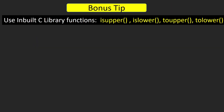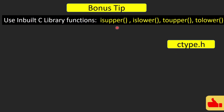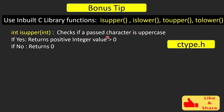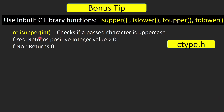Now for the bonus tip: instead of manually checking uppercase or lowercase and adding or subtracting 32, we can use predefined C library functions. We have four functions: isupper, islower, toupper, and tolower. Their declarations are in the header file 'ctype.h', which we must include. The isupper function takes an integer parameter and returns a positive integer if the passed character is uppercase, or 0 if it is not.